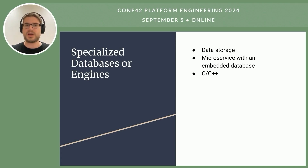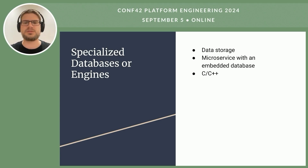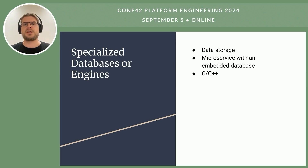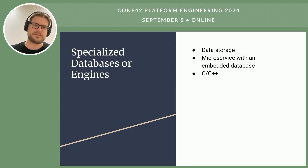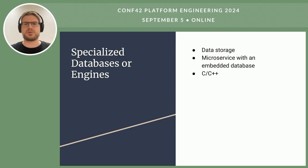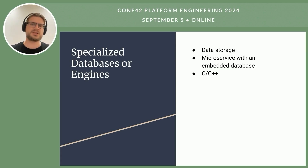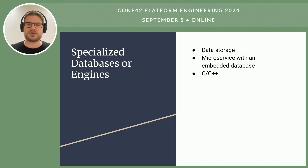In 2009, when relational databases couldn't effectively handle the growing load, the team started developing their own data storage engines. These engines function as microservices with embedded databases written in C or C++. Currently there are about 800 engine clusters, each responsible for its own logic — such as messages, recommendations, photos, hints, letters, lists, logs, news, etc. For each task needing a specific data structure or unusual queries, the C team creates a new engine.